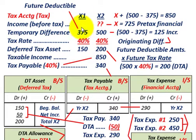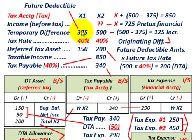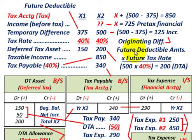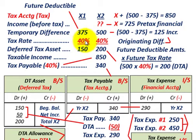So first off, what is our deferred tax asset? You start with your temporary difference for the year — $375,000 — that would be our future deductible amount. The deferred tax asset is calculated by taking our future deductible amount times our future tax rate. Our tax rate in this case is 40% each year.